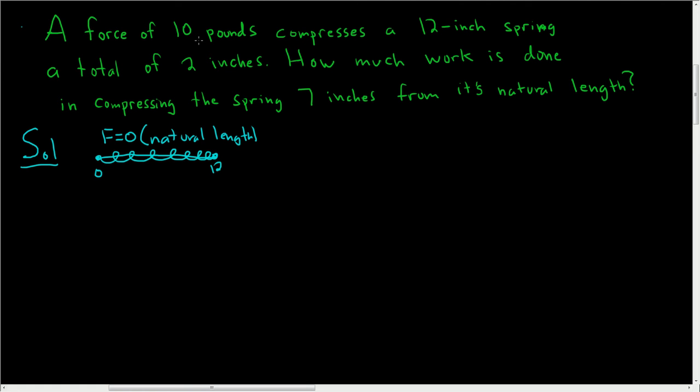And then we're told that a force of 10 pounds compresses the spring a total of 2 inches. So we have a force of 10 pounds and what it does is it compresses the spring. So this is 12, this is zero, and it compresses a total of 2 inches. So now we're at 2 and then here's our spring. So this has happened and then we want to know how much work is done in compressing the spring 7 inches from its natural length.